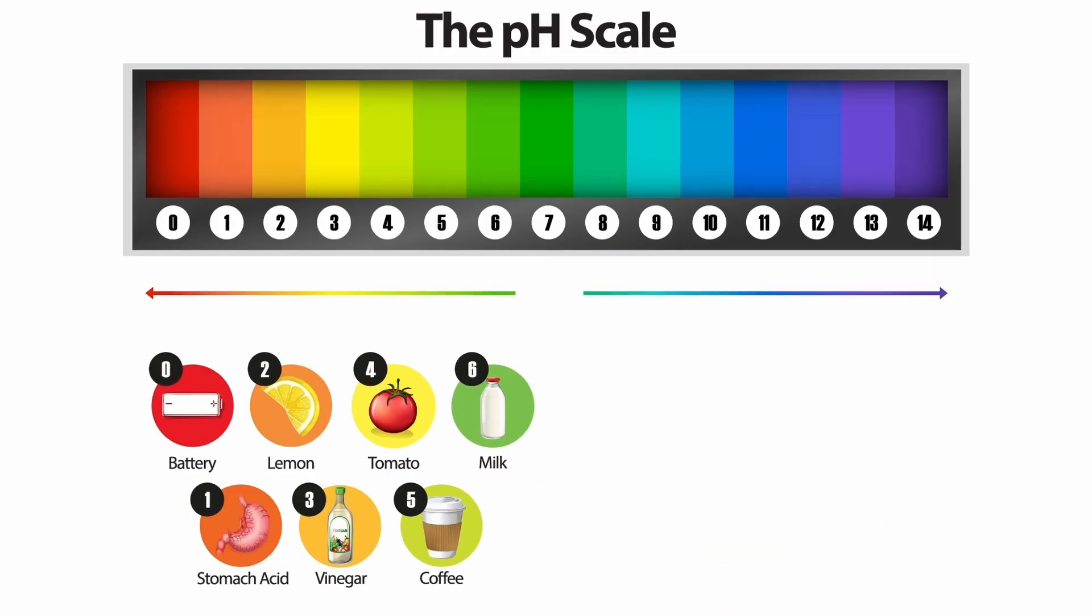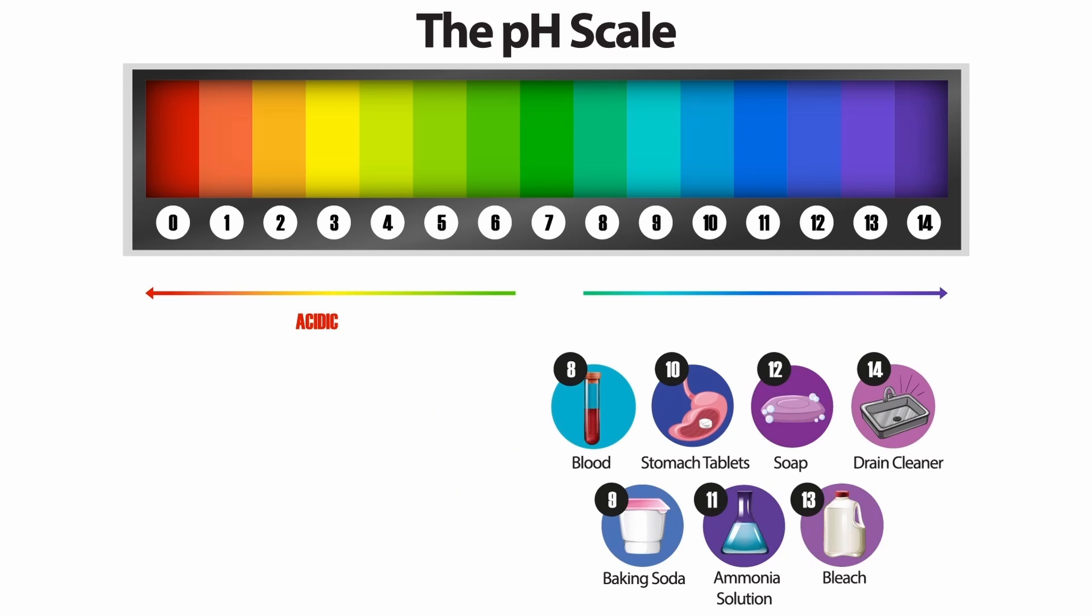Values below 7 are indicators of acidity, which intensifies as the number decreases, while values above 7 indicate alkalinity, which intensifies as the value increases.